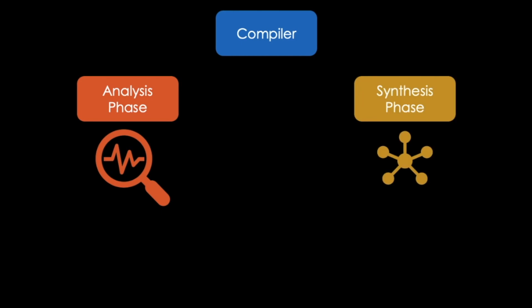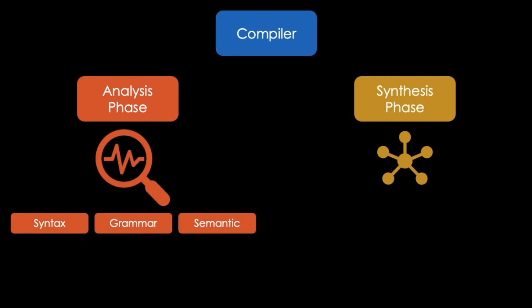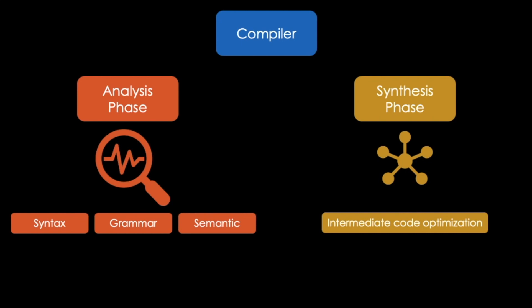The former one is used to create an intermediate representation of our source code. The code is checked with regard to grammar, semantic, and syntax. In the latter one, the intermediate code is optimized and the machine-readable code is generated.